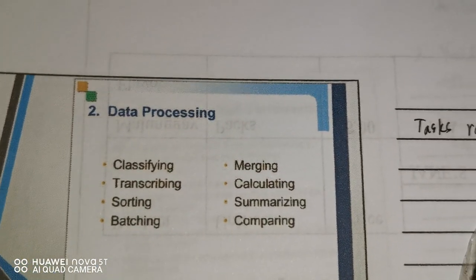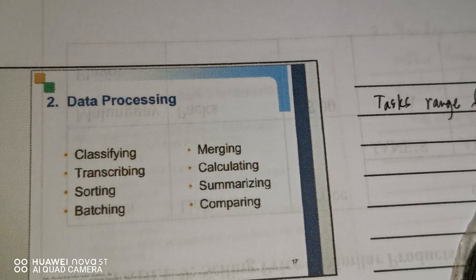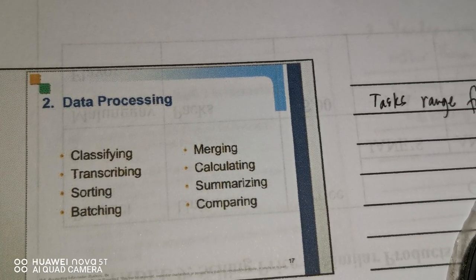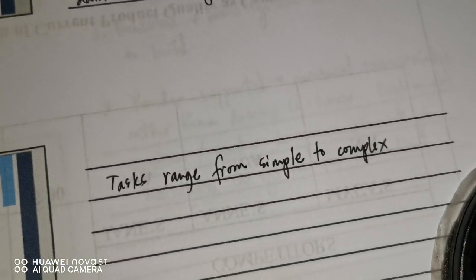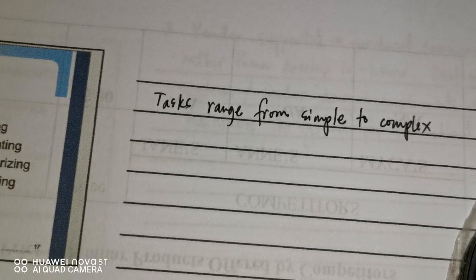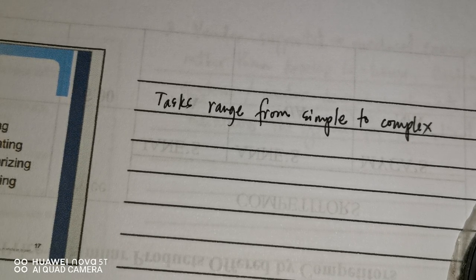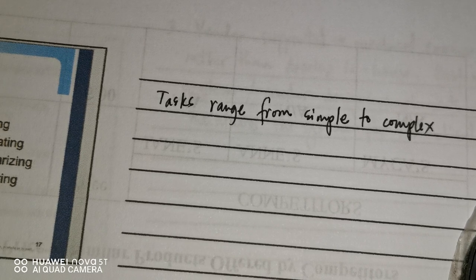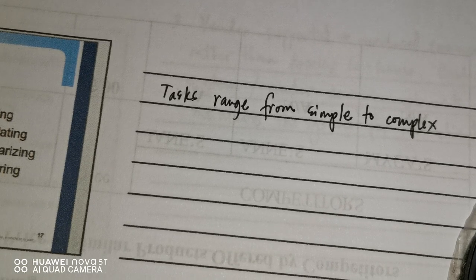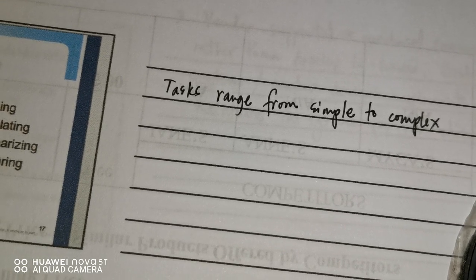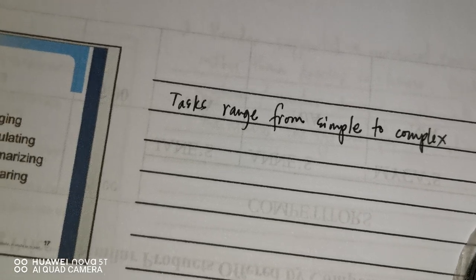Data processing involves classifying, transcribing, sorting, batching, merging, calculating, summarizing, and comparing — tasks that range from simple to complex. In accounting terms, this is the stage where you post to the ledger, prepare a trial balance, make adjusting entries, and prepare a worksheet.